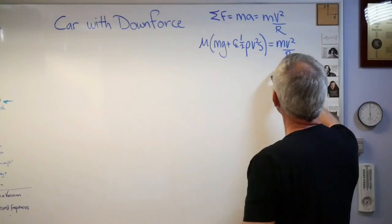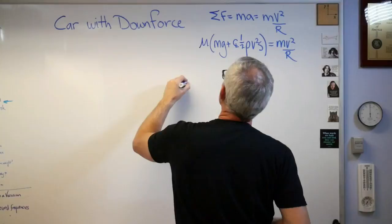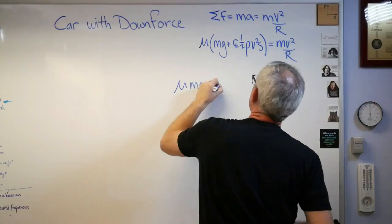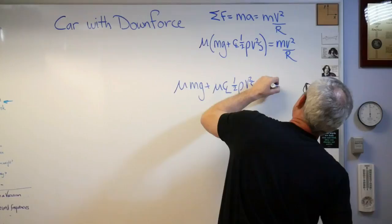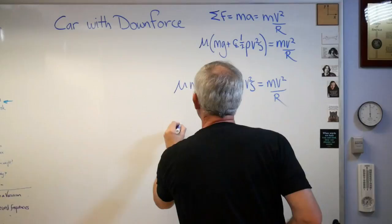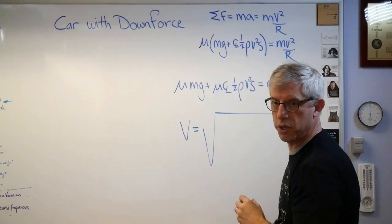If you want to solve this for V, let's go through two steps here. There's mu MG plus CL, whoops, mu CL one-half rho V squared S plus MV squared over R. Let's do a little bit of algebra here. You get the square root of, let me make sure I get this right, I'm gonna cheat and look at my computer here.